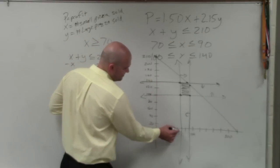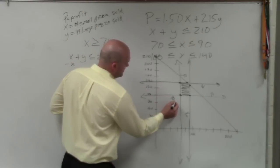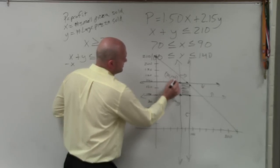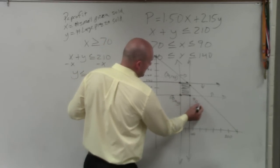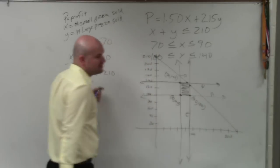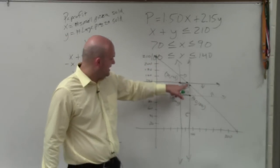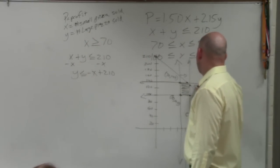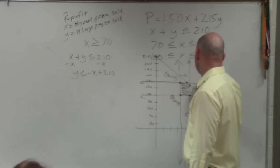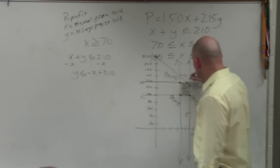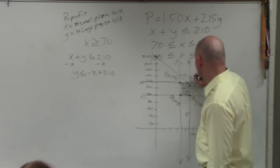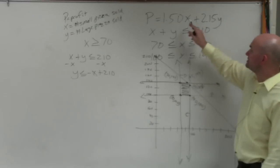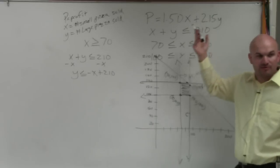So, this vertices is 70 comma 100. This one is 70 comma 140. This one is 90 comma 100. And then, these two, I'm not using graph paper. I'm just going to kind of estimate. I'll say this one's at 90 comma 135. And this one, I'll say is at 95 comma 140. Then, these are all your x and y coordinates. You plug those in for x and y here and determine which one gives you the maximum profit. Does that make sense?